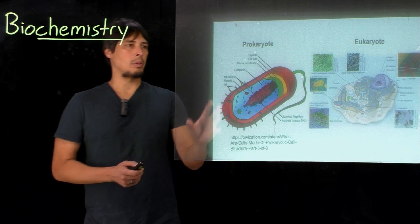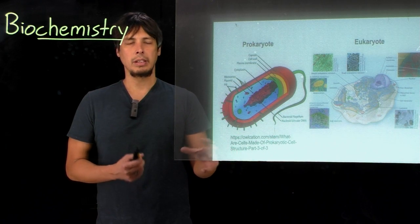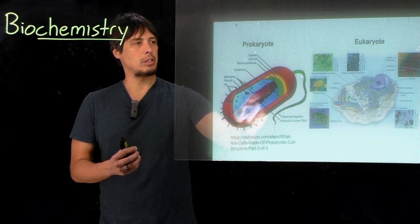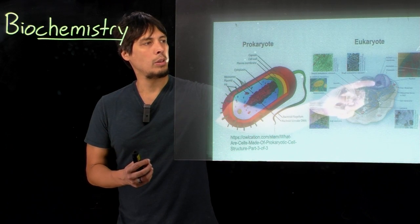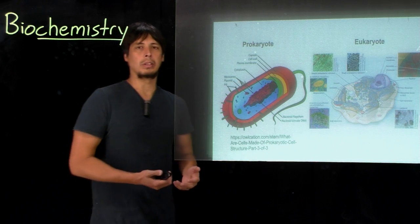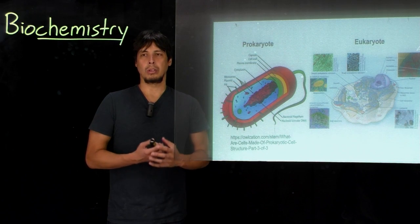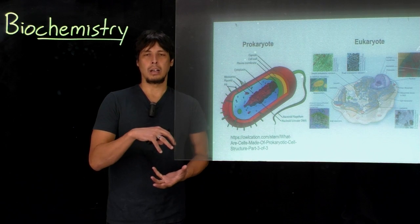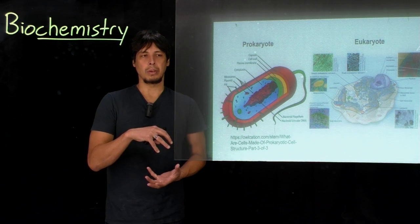The difference between prokaryotes and eukaryotes is how the DNA is organized inside. In the prokaryote, the DNA is shown here, whereas the DNA in the eukaryote is inside what's called a nucleus. The prokaryotes don't have a nucleus. And the nucleus is a double membrane that encapsulates the DNA inside of a eukaryote.